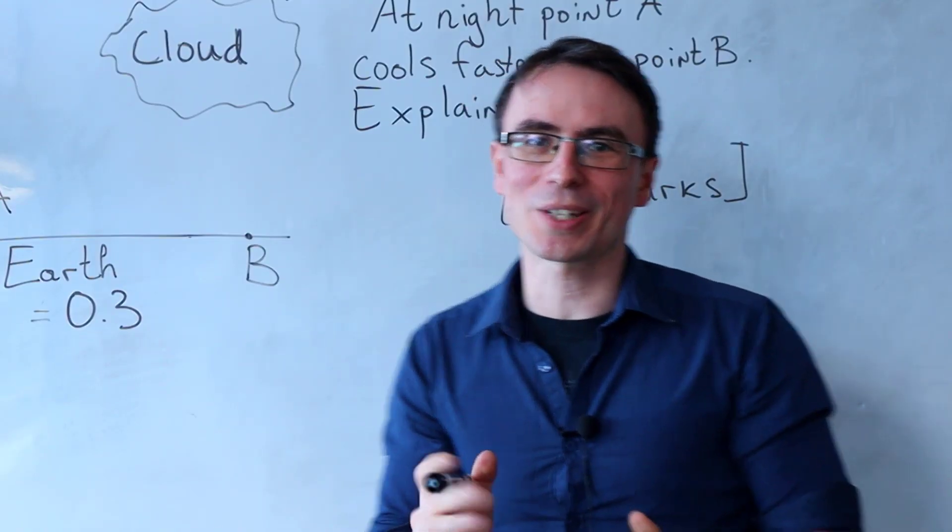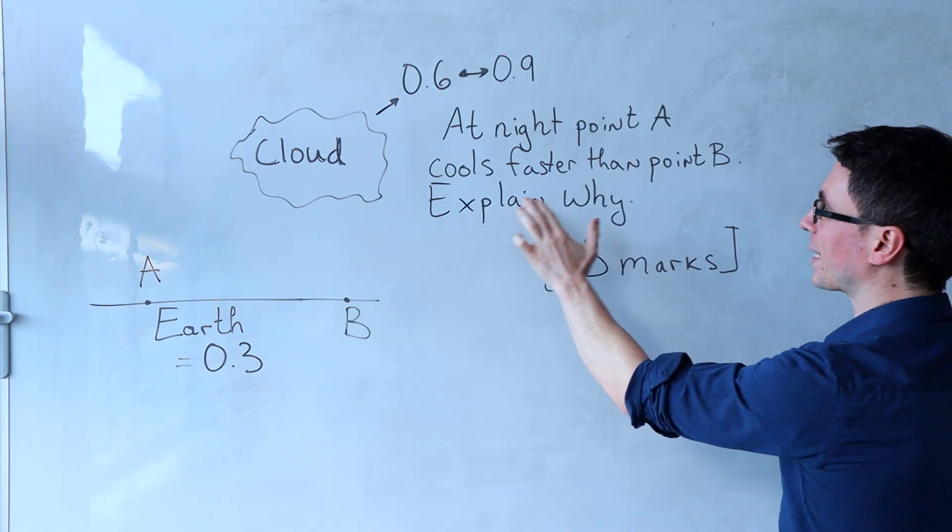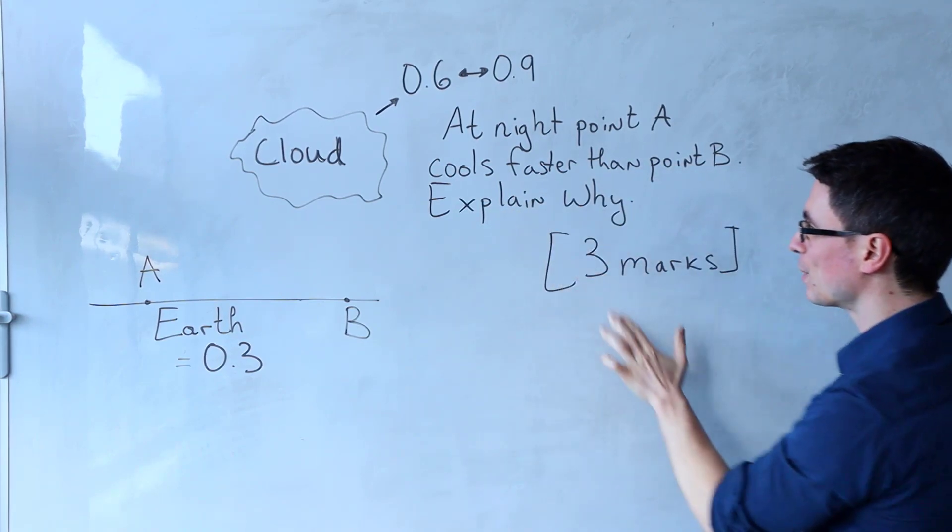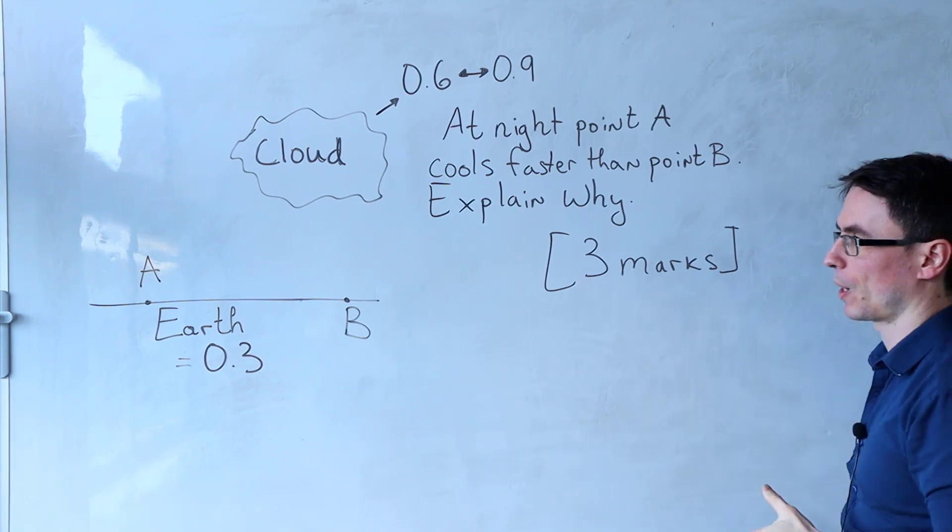And here is the tricky question. At night, point A cools faster than point B. Explain why for three marks.